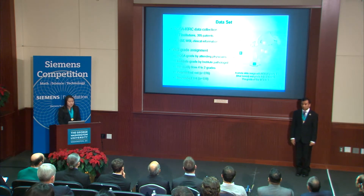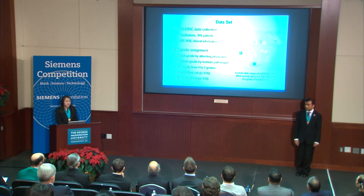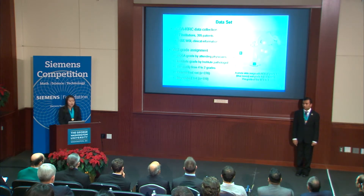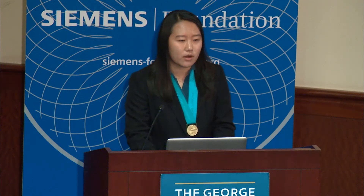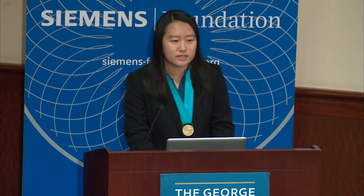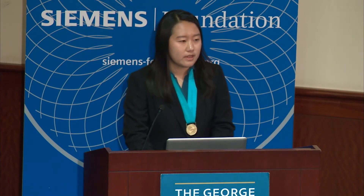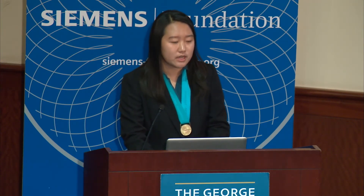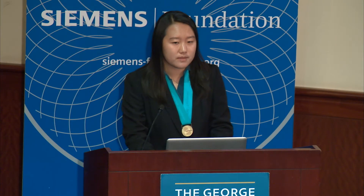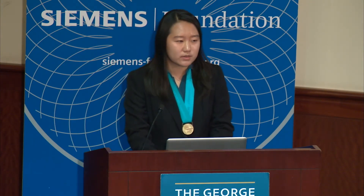Each whole slide image in the dataset contains two grade assignments: a TCGA grade given by an attending physician, and an institute grade given by our institute pathologist, who identified all the regions of interest on each whole slide image, taking the highest grade out of all the ROIs to be the grade of the whole slide image. After re-stratifying our grade labels from four grades to two, we found that 276 patients had agreeing grade assignments, forming the concordance set, while 119 patients had disagreeing assignments, forming the discordance set.